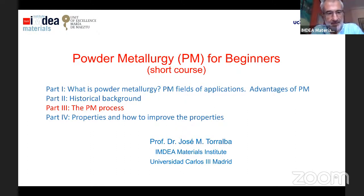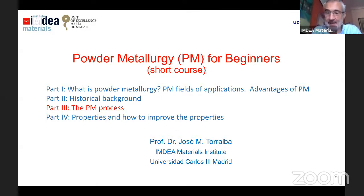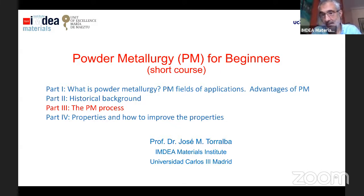We are going now to talk about the third part of this short course regarding powder metallurgy for beginners. In the previous lectures, we talked about the general things regarding the technology — what is powder metallurgy, field fabrication, advantages, disadvantages. In the second lecture, we talked about the historical background. Today, we are going to talk about the PM process.